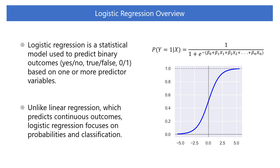Logistic regression is a statistical model used to predict binary outcomes based on one or more predictor variables. Unlike linear regression, which predicts continuous outcomes, logistic regression focuses on probabilities and classification.